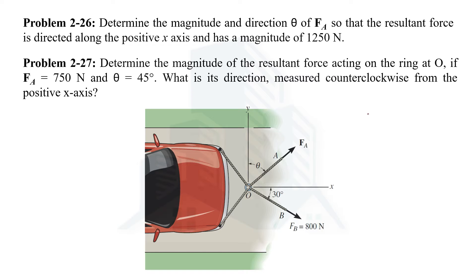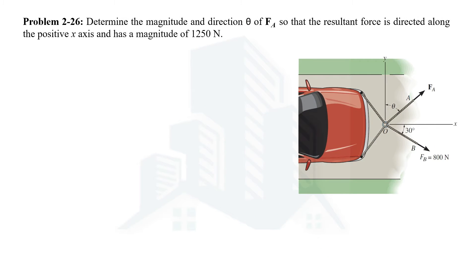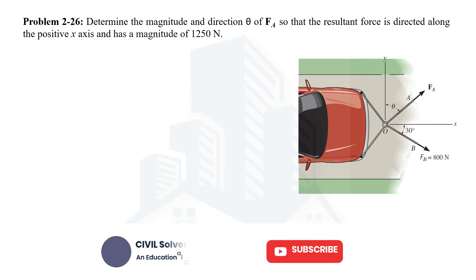Welcome everyone. In this video we are going to solve two examples — Example 26 and Example 27 — from the chapter on Force Vectors, which is Chapter 2 from Engineering Mechanics: Statics by RC Hibbeler. In Example 26 we are asked to determine the direction and magnitude of force FA when the magnitude and direction of the resultant force is given. In Example 27 we are asked to determine the resultant force acting at point O when two forces, their magnitudes and directions, are given.